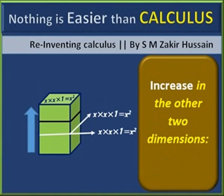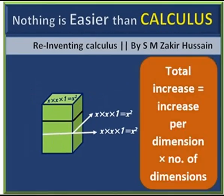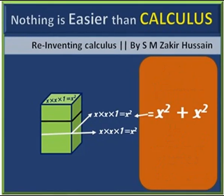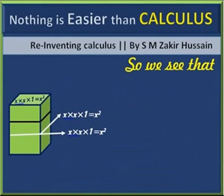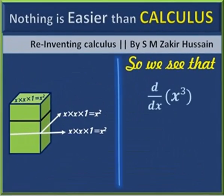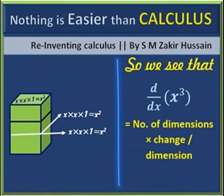The same change will take place in the other two dimensions. The total increase will be number of dimensions times change per dimension. The number of dimensions is three and change per dimension is x squared. So the total change will be three x squared. And we see that the Newtonian method also says the same thing. And according to our new method, the total change is number of dimensions multiplied by change in one dimension.